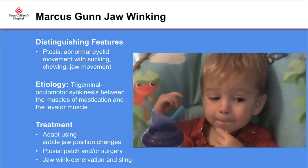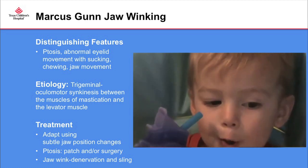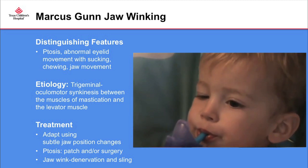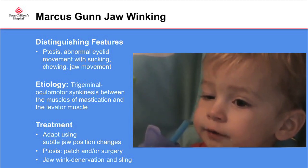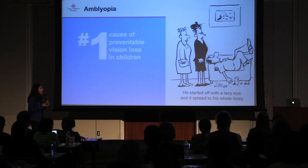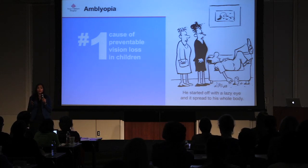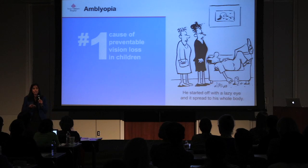If there's amblyopia due to the ptosis, patching is indicated. For the ptosis, if the patient is unable to control the jaw wink, there is a de-innervation procedure and a sling that can be done to elevate the eye. With the exception of pseudo-strabismus, every diagnosis we've discussed can cause amblyopia. Amblyopia is the number one cause of vision loss in children. Early detection of amblyopia or strabismus can make amblyopia preventable. Amblyopia is also the number one cause of monocular vision loss in adults under age 60.